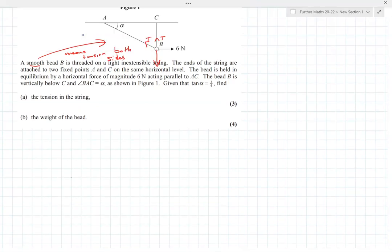Let's do that by resolving horizontally and vertically. Here we've got a 6 newton force, we've got tension going upwards, we've got weight going downwards which is one of the things we've been asked to find, and we've got tension going here where this angle is alpha. It tells us tan alpha equals three over four. We can see it's a three four five triangle, so if that's alpha, tan alpha is three over four, sine alpha is three over five, and cos alpha is four over five.